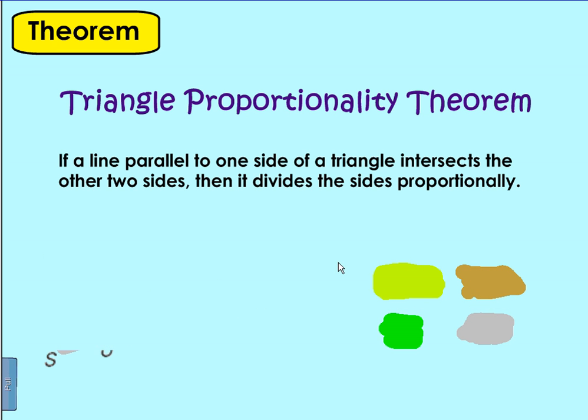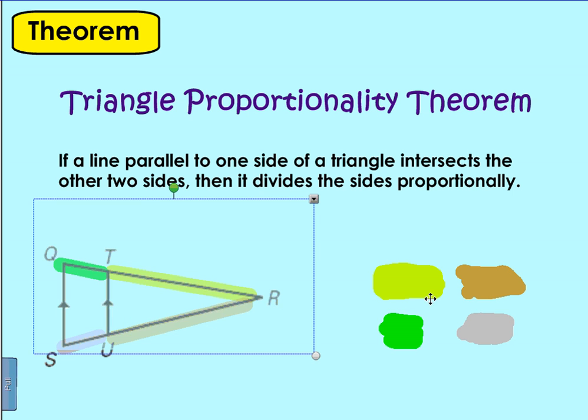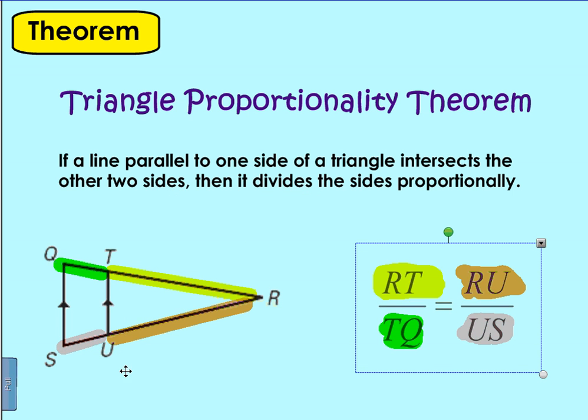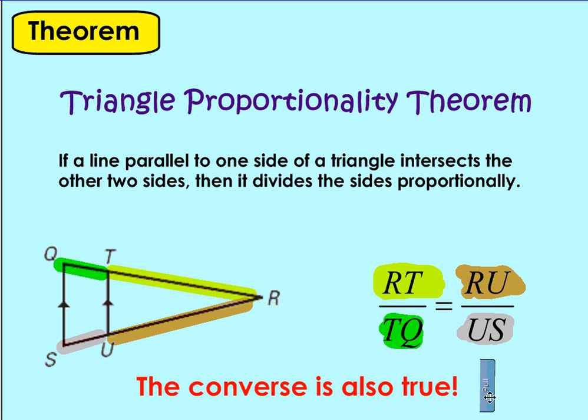Our first one is the Triangle Proportionality Theorem, and this theorem states that if a line parallel to one side of a triangle intersects the other two sides, then it divides the sides proportionally. So what we're able to say then is that RT over TQ should be the same ratio as RU over US. What's also neat about this theorem is that the converse is also true. So if I notice that the sides are proportional, I can say that those lines are parallel. So it's another way that we can show that lines are parallel.